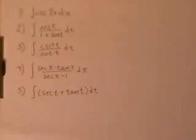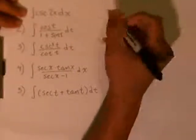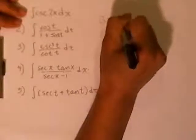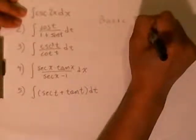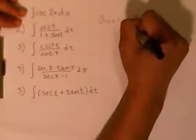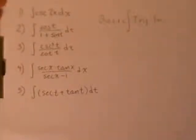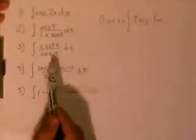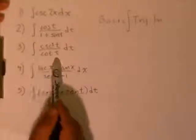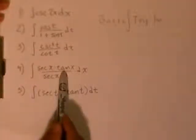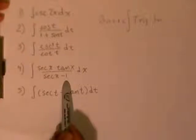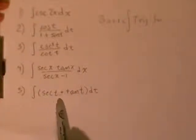Hi, my name is John. I'll be going over some integrals of basic trigonometric functions. We're going to integrate: the cosecant of 2x dx, the integral of cosine of t over 1 plus sine of t, the cosecant squared of t over the cotangent of t, secant tangent over 1 plus secant of x minus 1, and the secant of t plus the tangent of t dt. We're going to be doing these five.